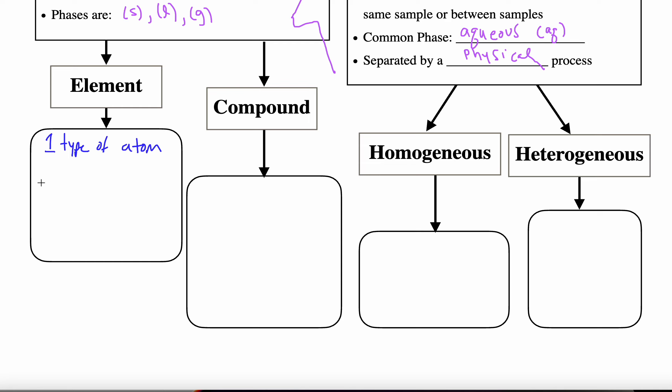So let's look at a couple of examples. For instance, the element gold. Gold, if I write gold's chemical formula, it's simply its periodic symbol, Au. Now, another element that you're familiar with, oxygen.